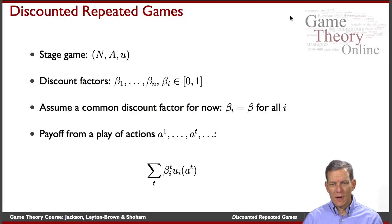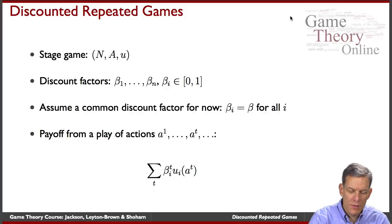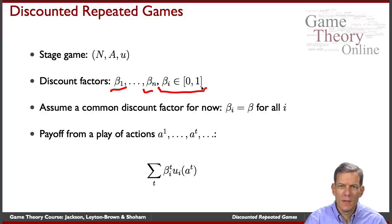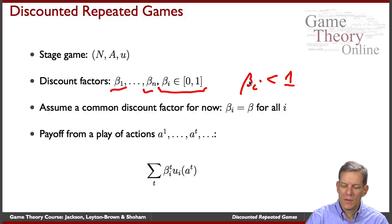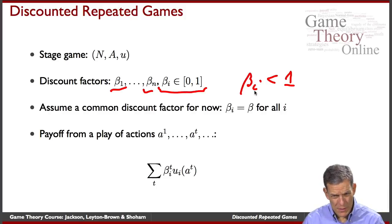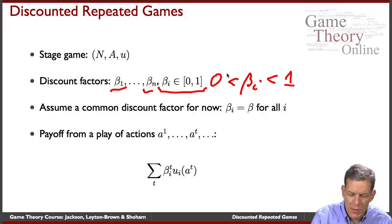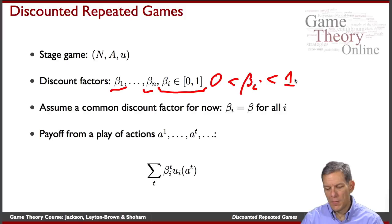We're looking at a stage game — just take a normal form game and play it repeatedly over time. Each player has a discount factor beta_i, taken to be in [0,1]. Generally we'll take beta_i to be strictly less than 1, so it's of more interest. If it's equal to 0, you don't care about the future at all — it's basically just a one-stage game. The interesting case is when players care somewhat about the future but care more about today than tomorrow.